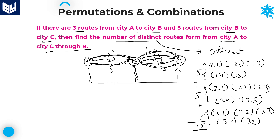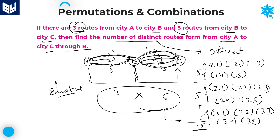Total fifteen different routes are formed from A to C through B — that is the answer. The shortcut method: just by seeing the question, you can calculate three into five, which equals fifteen. Here there are three routes from A to B and five routes from B to C; the product of these two gives the exact answer. Fifteen is the answer for this question.